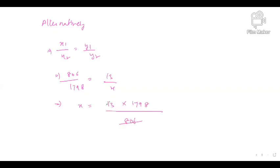Let's see the alternate method also. Alternatively, x1 by x2, y1 by y2. So 806 by 1798 is equal to 13 by x. x is equal to 13 into 1798 by 806. Cross multiply. 29 days would be our answer.